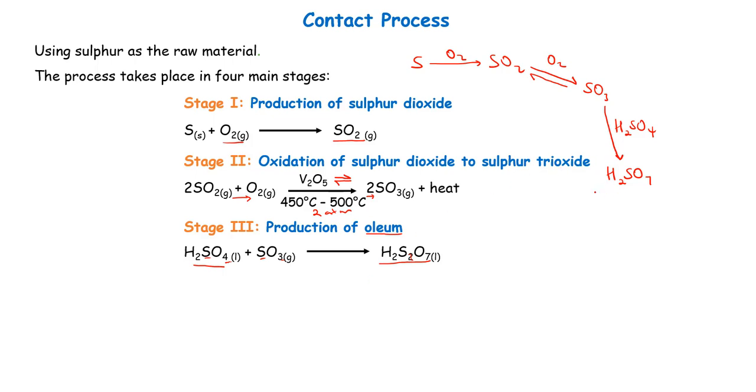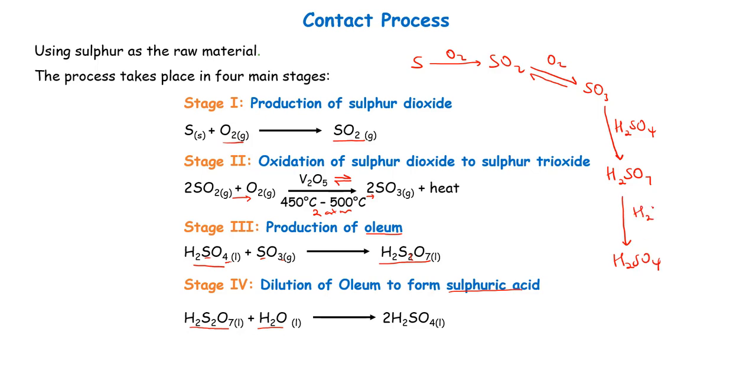After producing oleum we are left with one more stage which is the dilution of our oleum to form sulfuric acid. For it to form sulfuric acid you have to dissolve our oleum in a calculated amount of water. You don't just add water, you have to know depending on the amount of oleum you have, which amount of water you will have to add for it to form your sulfuric acid. Then our next stage will be formation of our sulfuric acid by adding well-calculated amount of water.